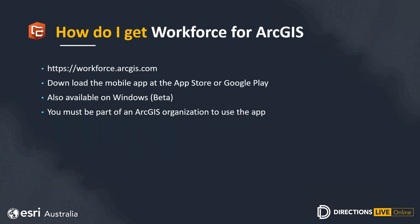How do you get Workforce for ArcGIS? If you're using ArcGIS Online, you can go straight to workforce.arcgis.com and log in with your ArcGIS Online details. If you have your own portal, you can download the Workforce for ArcGIS application from MyESRI and install it on your own servers. The mobile app is available from the Apple Store or Google Play, and is currently in beta for Windows. You must be part of an ArcGIS organisation as a Level 2 user, but everybody with an ArcGIS Online organisation currently has access — no additional licenses required.